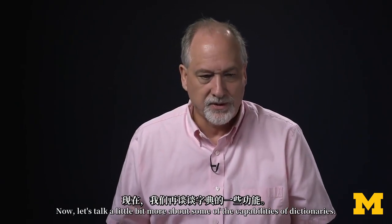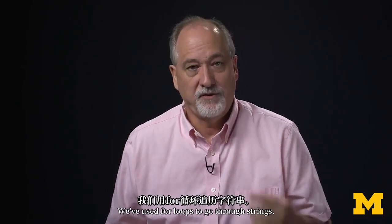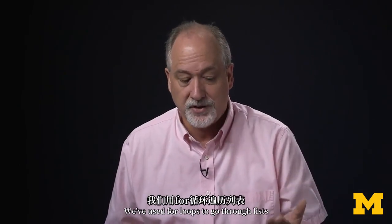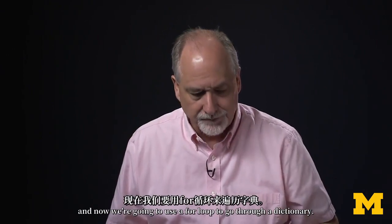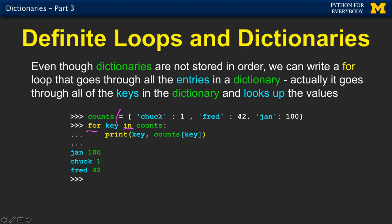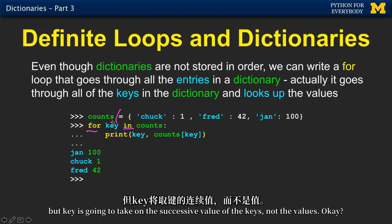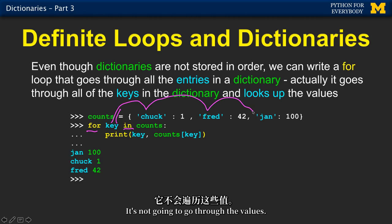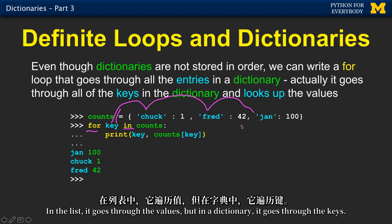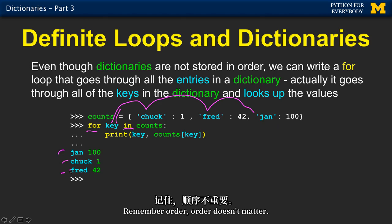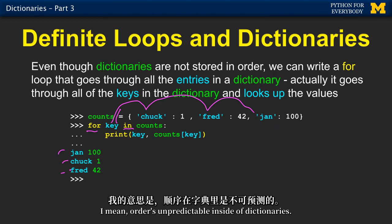Now let's talk a bit more about some of the capabilities of dictionaries. We've used for loops to go through strings, files, and lists. Now we're going to use a for loop to go through a dictionary. For some iteration variable in some collection — what you do here is: key is a great name for it, but key is going to take on the successive values of the keys, not the values. In a list, it goes through the values. But in a dictionary, it goes through the keys. So it's going to print out Jan, Chuck, and Fred — though order is unpredictable inside of dictionaries.